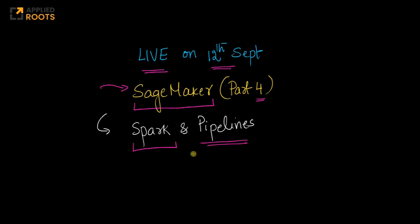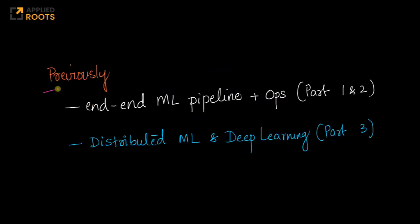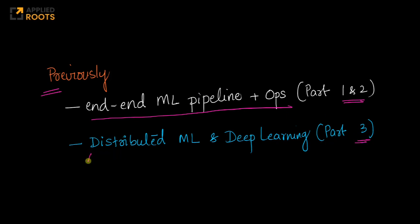Previously, in the last three live sessions, in Part 1 and Part 2, we understood how to build an end-to-end machine learning pipeline and how to perform MLOps end-to-end with some simple real-world examples. In Part 3, we learnt about distributed machine learning, various ways of distributing machine learning training, and also how to perform distributed deep learning algorithms with some code snippets.